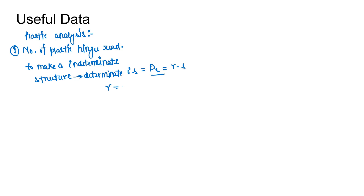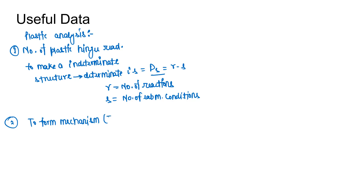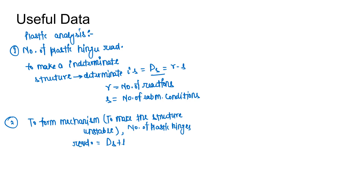Here, r is the number of reactions and s is the number of equilibrium conditions. The second point: to form a mechanism, or to make the structure unstable, the number of plastic hinges required is ds plus 1. This is the first concept.